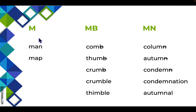M says /m/ like in 'man' and 'map.' If you have an M followed by a B, the B is often silent, like in 'comb,' 'thumb,' or 'crumb.'